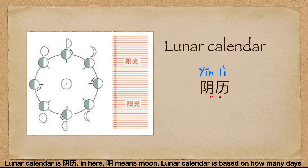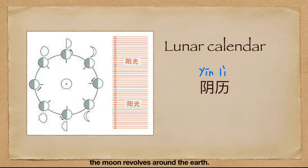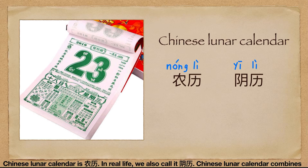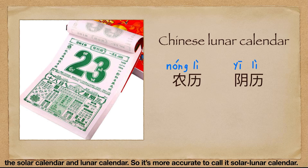阴 means moon. The lunar calendar is based on how many days the moon revolves around the earth. The Chinese lunar calendar is 农历. In real life, we also call it 阴阳历, because the Chinese lunar calendar combines the solar calendar and lunar calendar. So it's more accurate to call it the solar-lunar calendar.